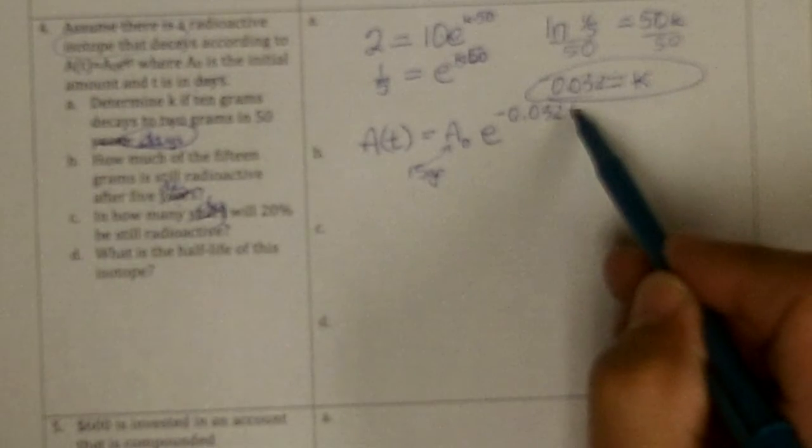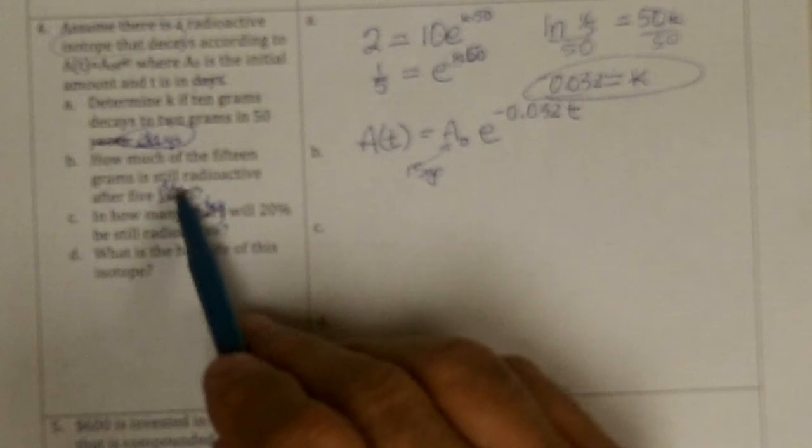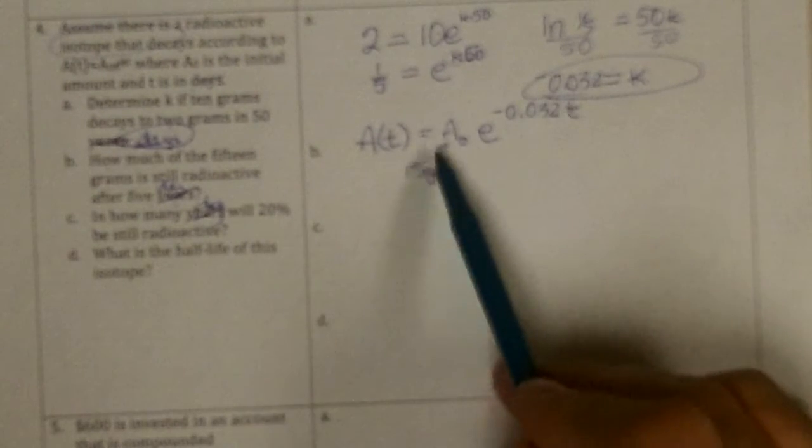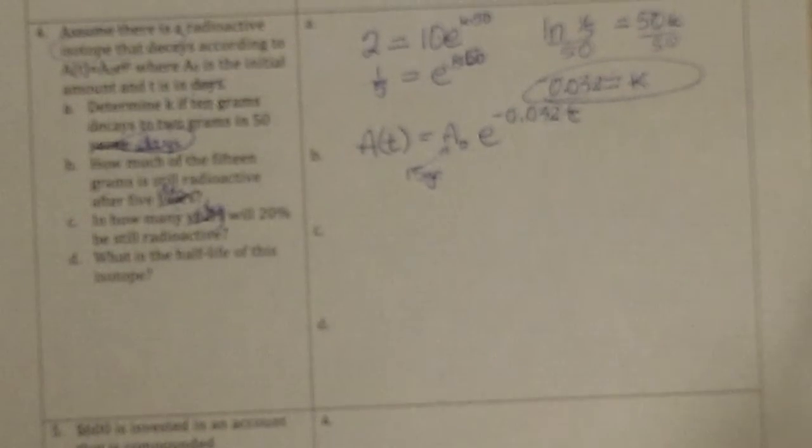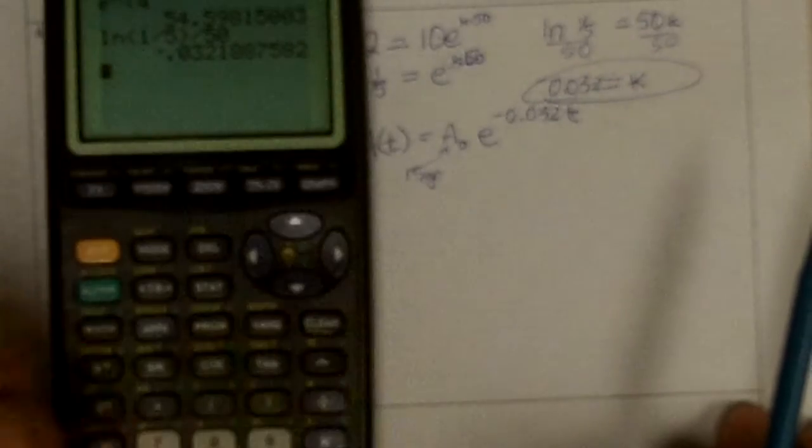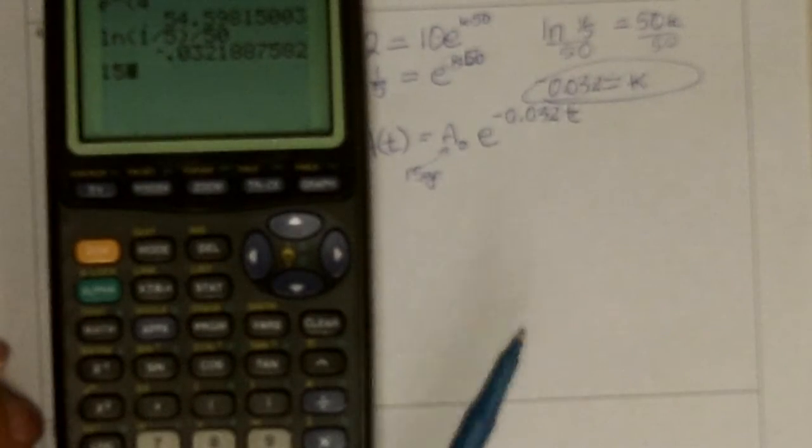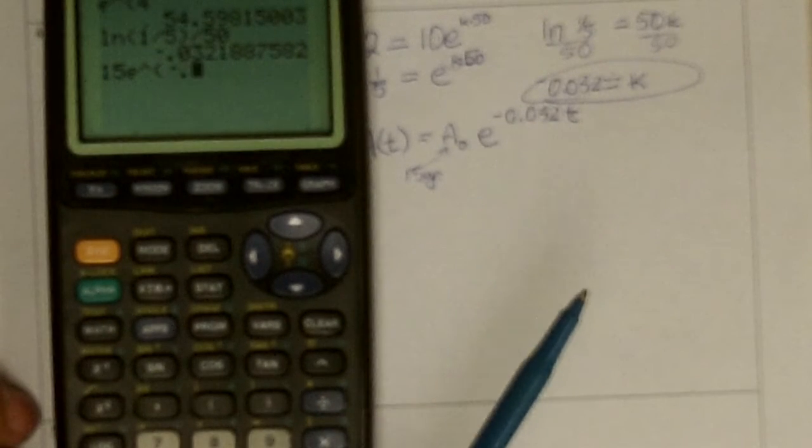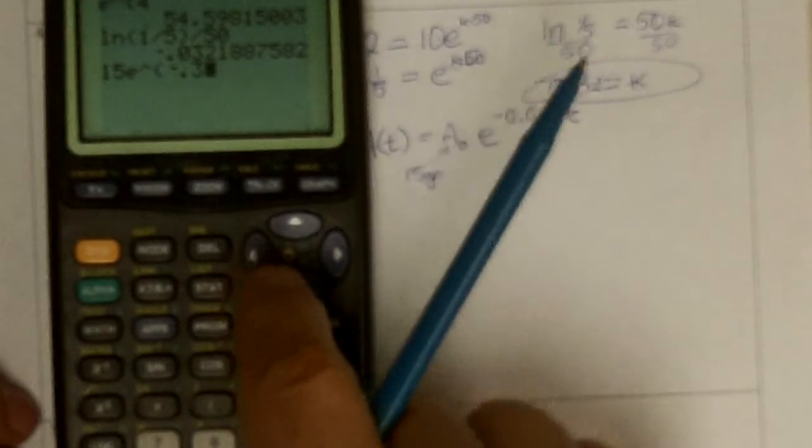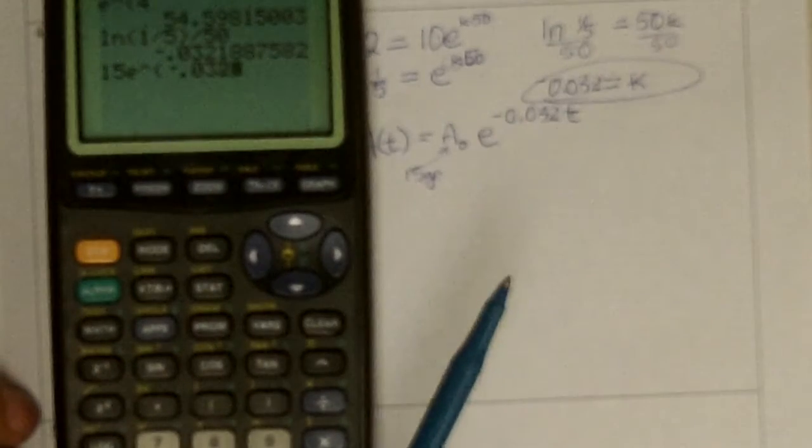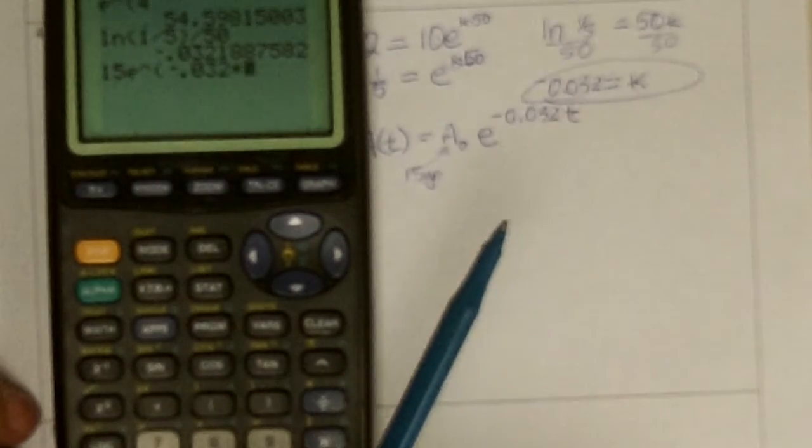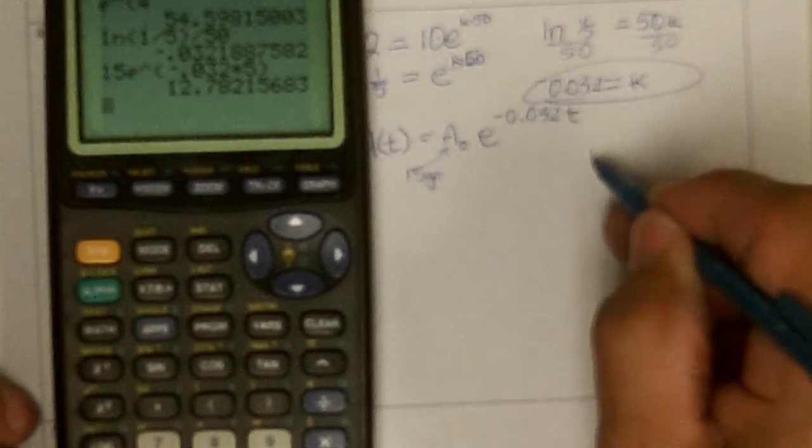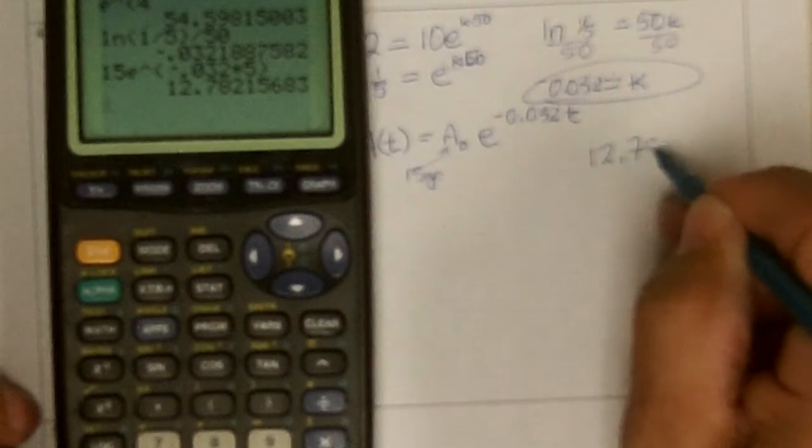So how much would be left? Well, I'm going to put in, and this was at, b was in 5 days. So I put 5 in the exponent and 15 in here, and I'll work out to find out how much is left. So I'm going to go starting with 15 this time, e to the negative 0.032 times 5 days. And that ends up to being, there would be 12.78 grams.